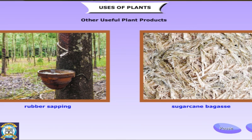Bagasse is sugarcane fiber waste left after juice extraction, which is used to make cardboard and paper.